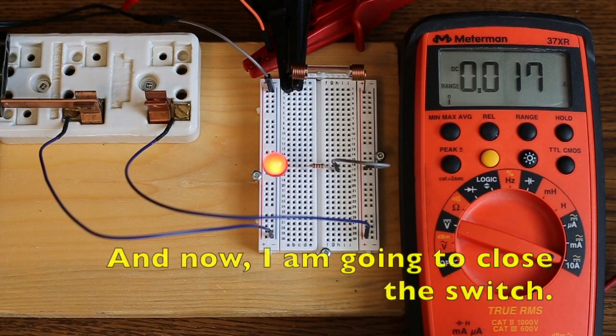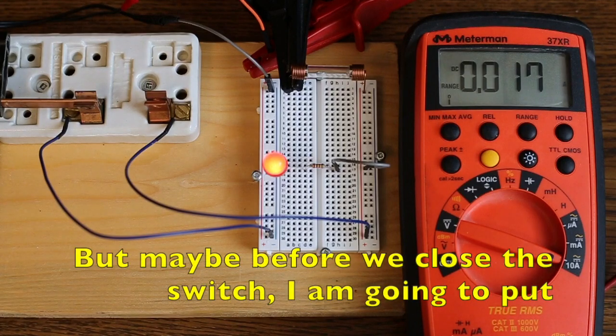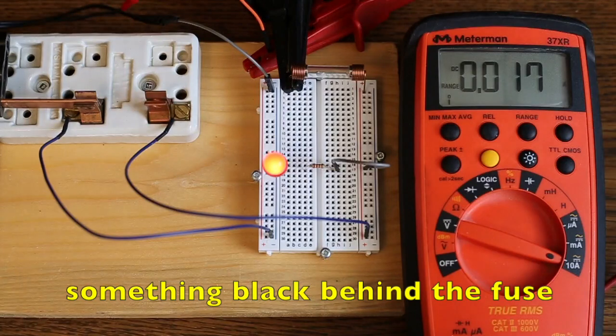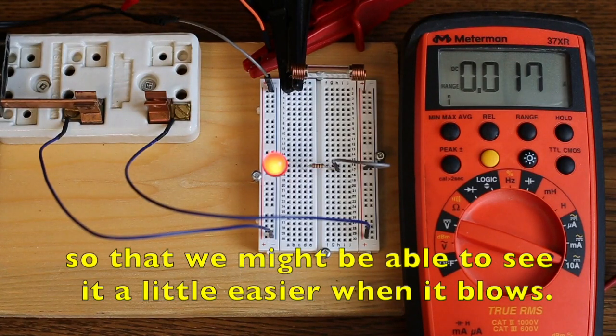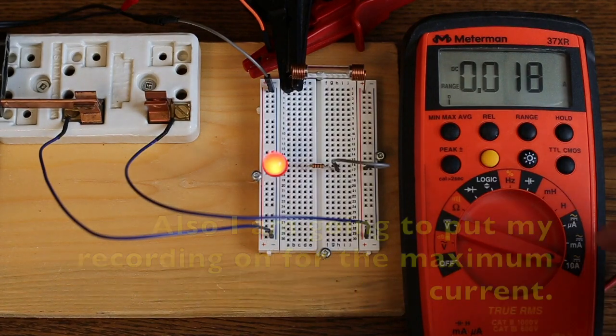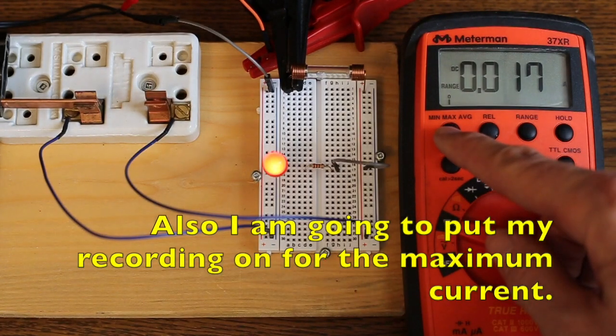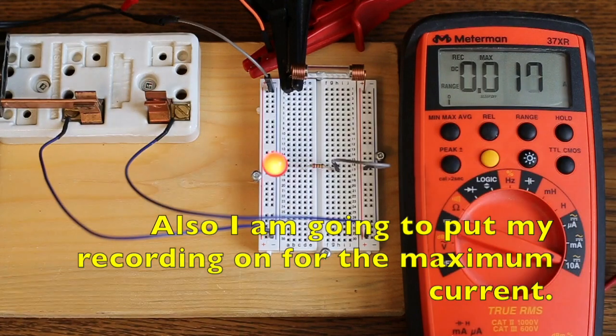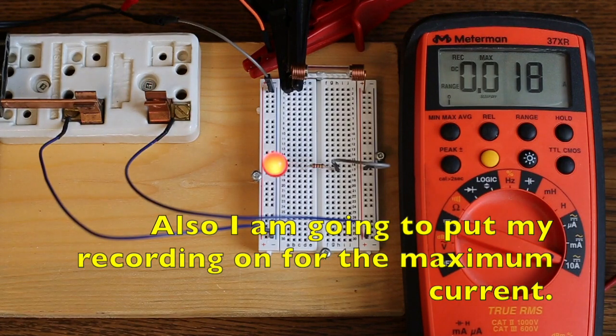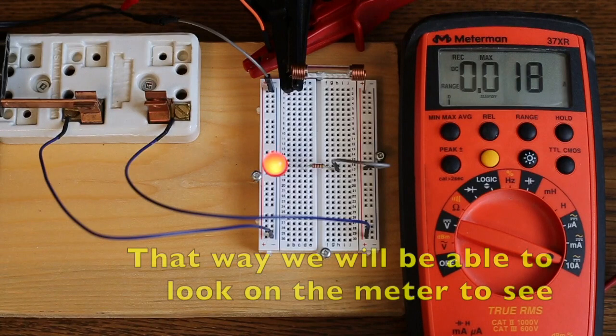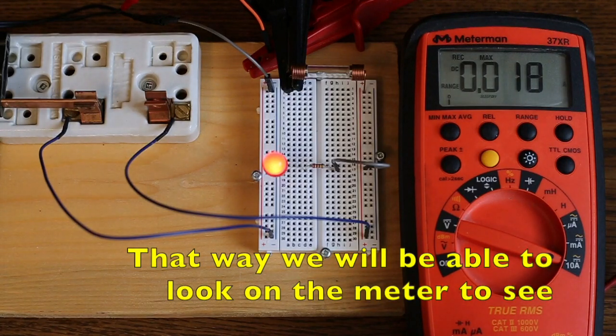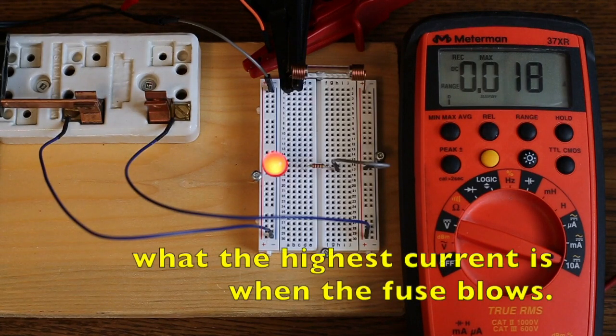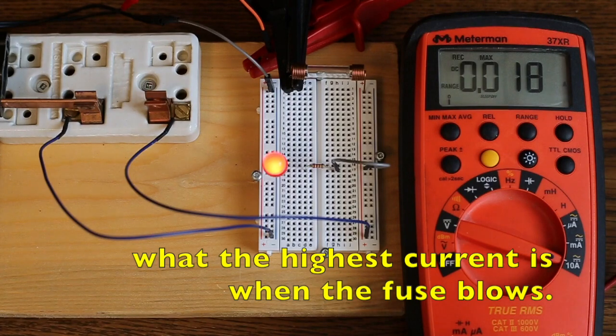And now, I am going to close the switch. But maybe before we close the switch, I'm going to put something black behind the fuse, so that we might be able to see a little easier when it blows. Also, I'm going to put my recording on for the maximum current. That way, we'll be able to look on the meter to see what the highest current is when the fuse blows.